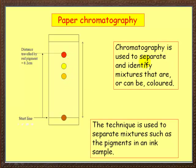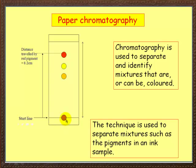So chromatography is used to separate and identify mixtures that are or can be coloured. The technique is used to separate colour mixtures such as the pigments in an ink sample. You might use this in a basic forensic science experiment to see whose pen was responsible. Or you can separate out the colours in Smarties. So paper chromatography is the last of our five techniques.